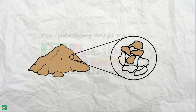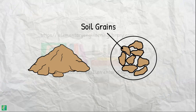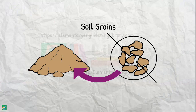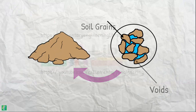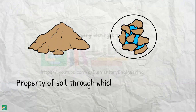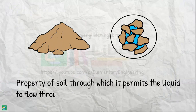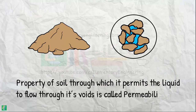A soil mass is composed of small solid particles called soil grains. When depositing in a soil mass, these soil grains arrange themselves so that some amount of empty space is enclosed between them. We call these spaces voids. Water can flow through these voids. The property of the soil which permits water or any liquid to flow through its voids is called permeability.